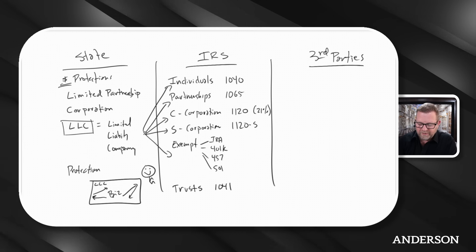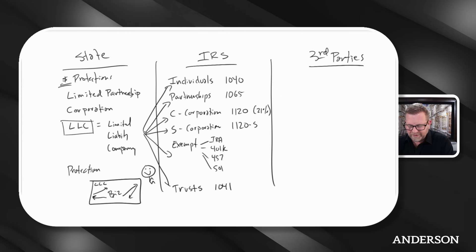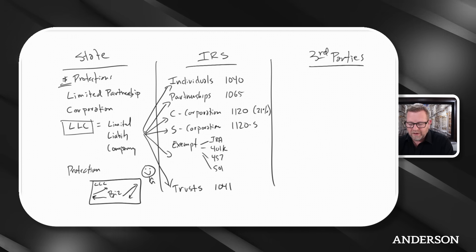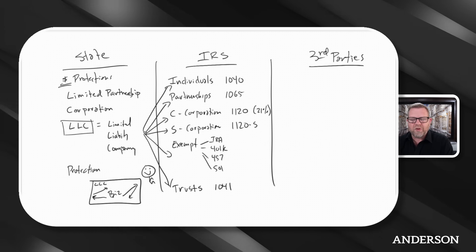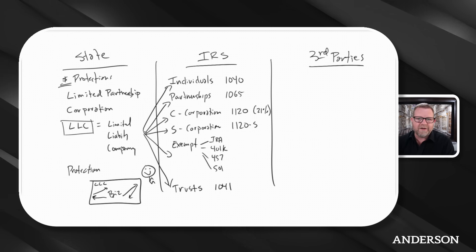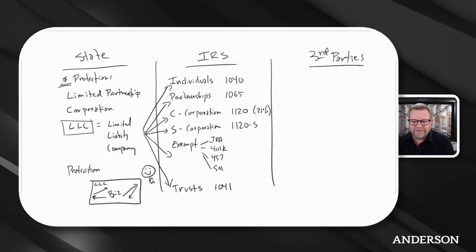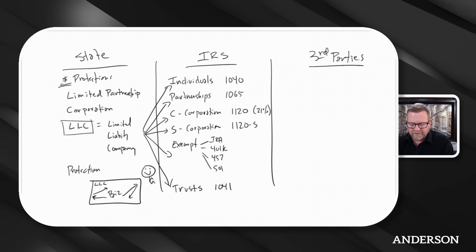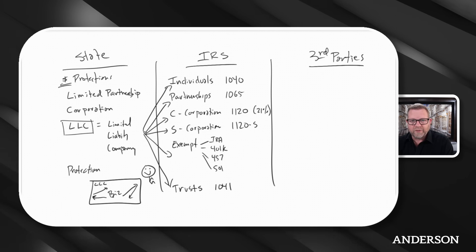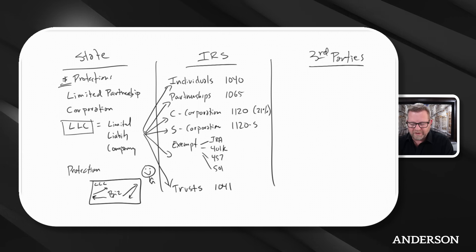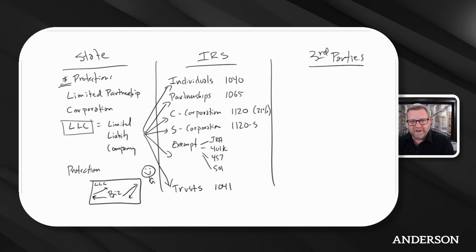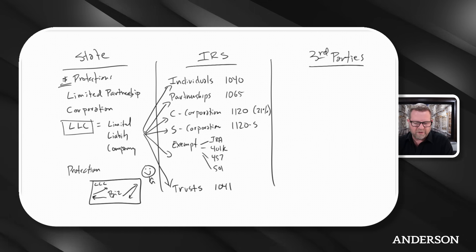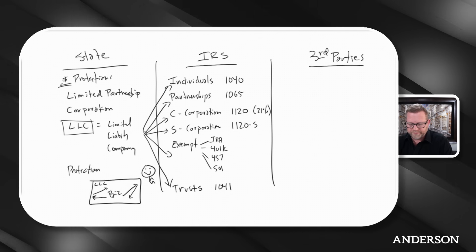The LLC could also be exempt, or taxed as a trust. You could technically set up an LLC and get it exempt under 501c3, or have an LLC where the member is an IRA or a 401k. So it's taxed on those forms — 5500s, 501c3s, private foundations — all of these file a 990. The IRS doesn't really care what you did with the state; they just ask how do you want to tax it, and what tax form is it going to go on.